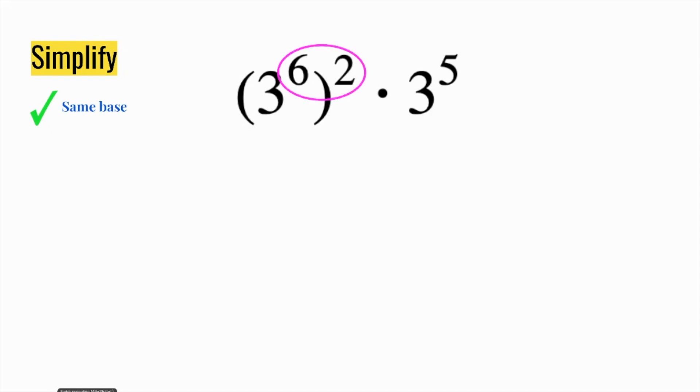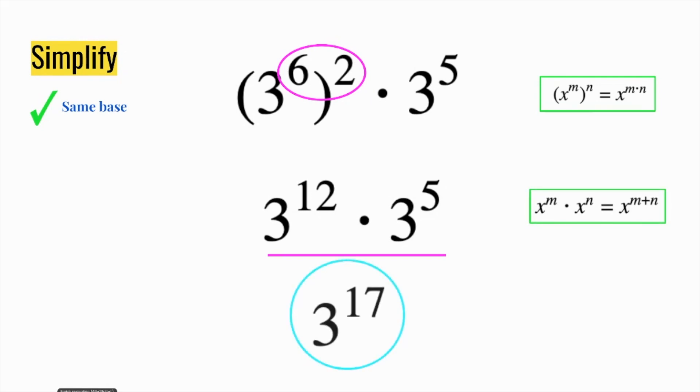So by focusing on my exponents first, 3 to the 6th to the 2nd power, that tells me I'm going to multiply my exponents together to get 3 to the 12th. So that times 3 to the 5th. I'm going to add my exponents to get a final answer of 3 to the 17th.